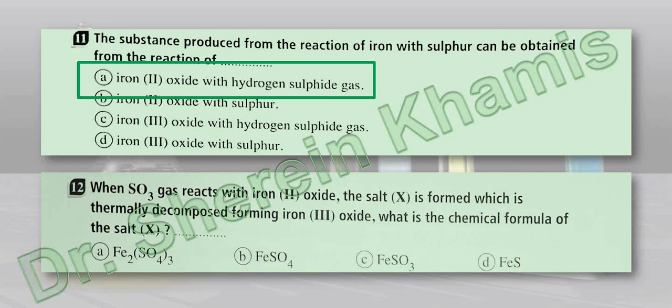Question number 12: when sulfur trioxide gas reacts with iron(II) oxide, a salt X is formed which is thermally decomposed to give iron(III) oxide. What is the chemical formula of salt X? After thermal decomposition it gives iron(III) oxide. This means the salt is FeSO₄; upon oxidation, the oxidation state becomes 3, forming iron(III) oxide after thermal decomposition.